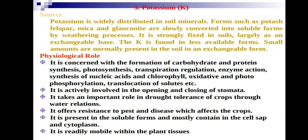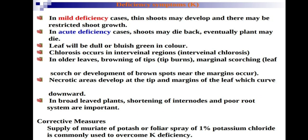Potassium deficiency symptoms include mild deficiency causing thin shoot development and restricted shoot growth. Acute deficiency causes shoot die-back — where dying proceeds from the shoot end toward the tip of the stem. This shoot die-back is an important deficiency disorder of potassium.